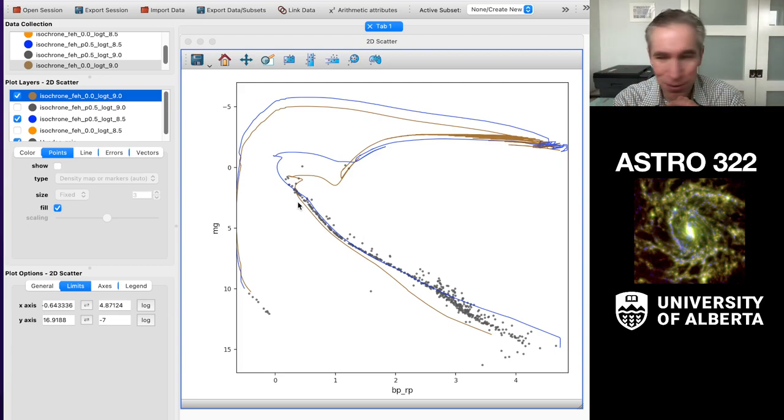Again, pick a cluster of your choice, choose something that excites you and then, or at least is the first one on the list. And then you can upload this image as the equivalent of this image as your homework submission. Okay. That's all we got.